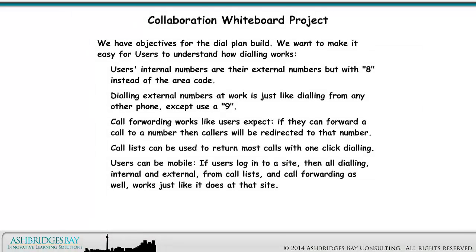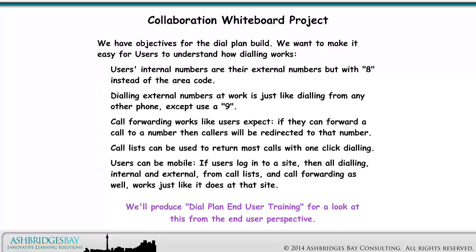We have objectives for the dial plan build. We want to make it easy for users to understand how dialing works. Users' internal numbers are their external numbers but with an 8 instead of the area code. Dialing external numbers at work is just like dialing from any other phone, except use a 9. Call forwarding works like users expect — if they can forward a call to a number, then callers will be redirected to that number. Call lists can be used to return most calls with one-click dialing. Users can be mobile: if they log into a site, all dialing — internal and external, from call lists and call forwarding — works just like it does at that site. We'll produce dial plan end user training for a look at this from the end user perspective.